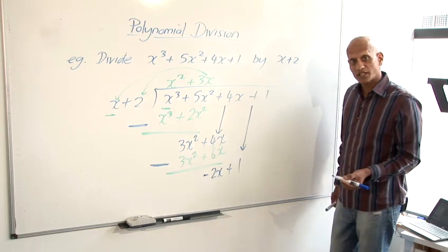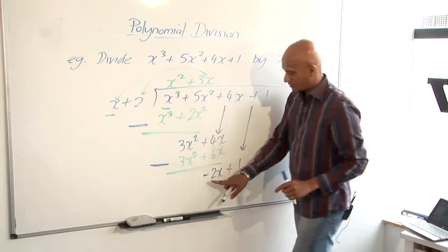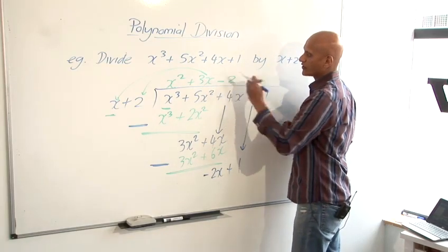And then repeat the procedure all over again. Looking at the front two here, what do I have to multiply x by to get minus 2x? The answer is minus 2. So I put my minus 2 on the top there.